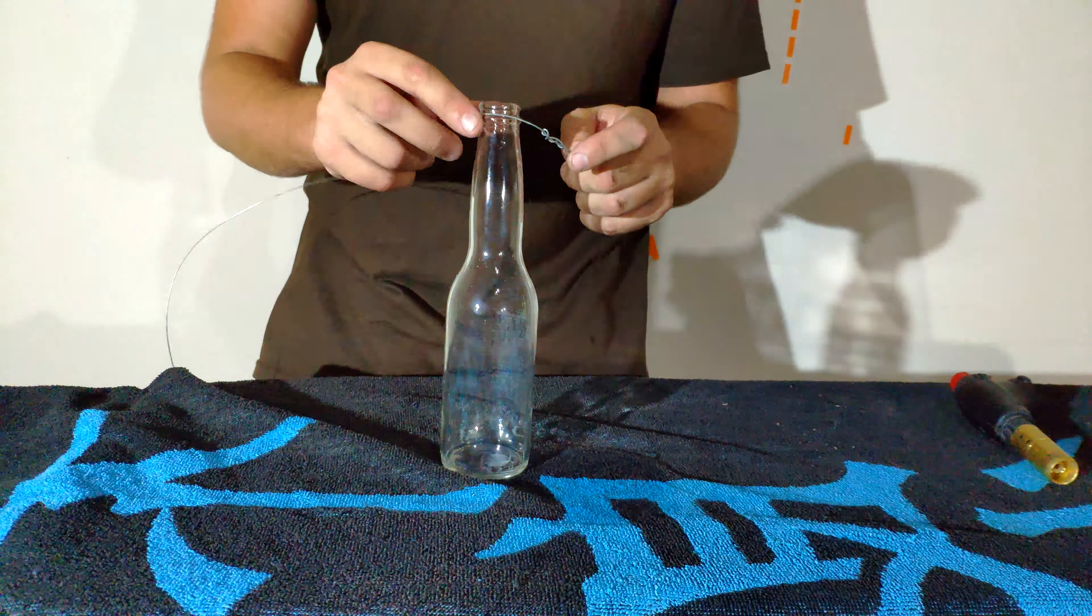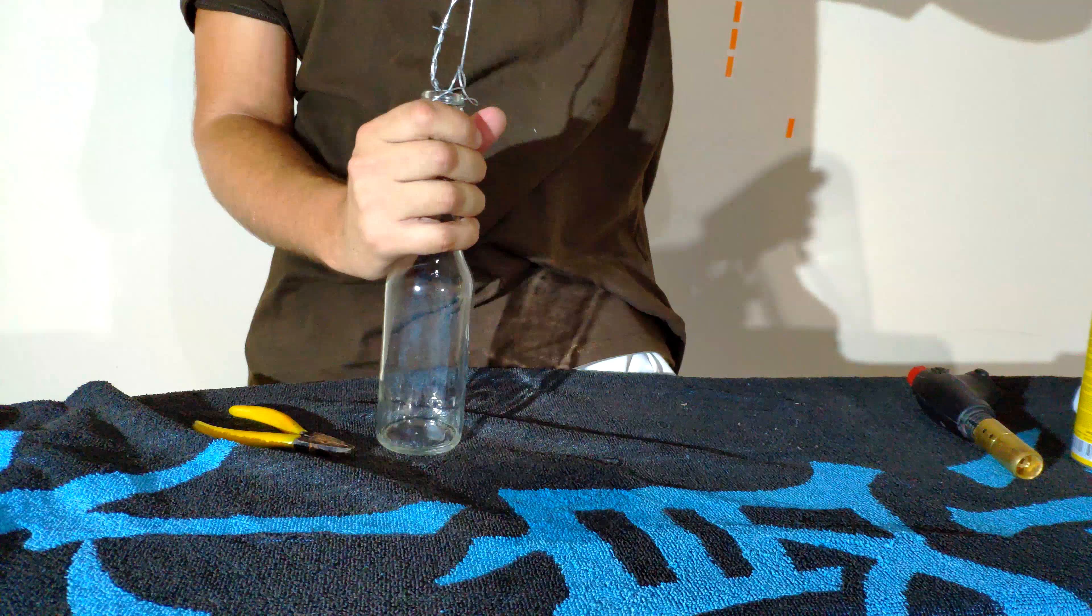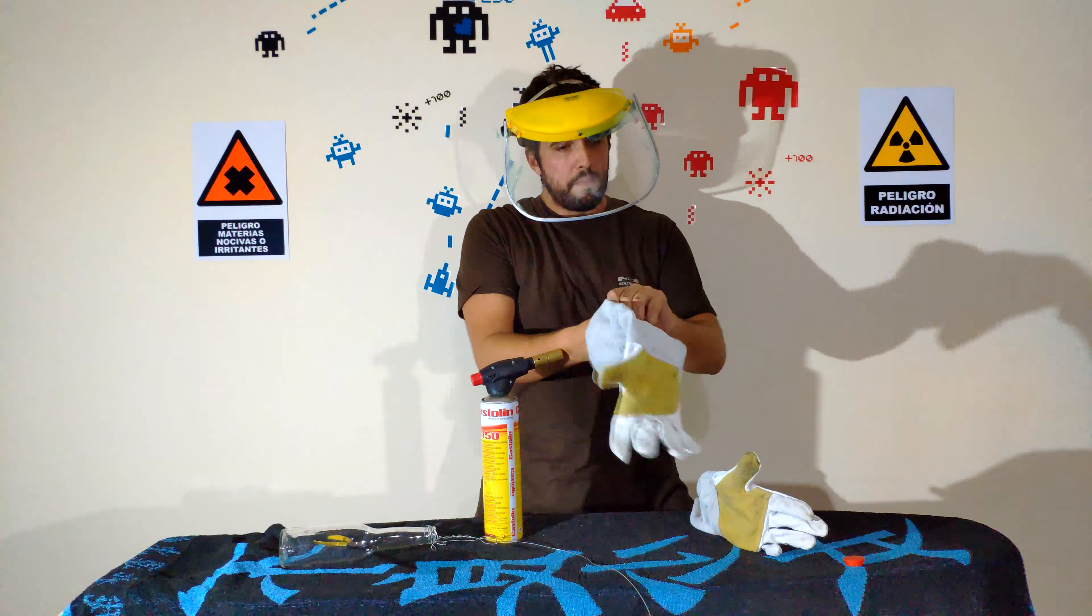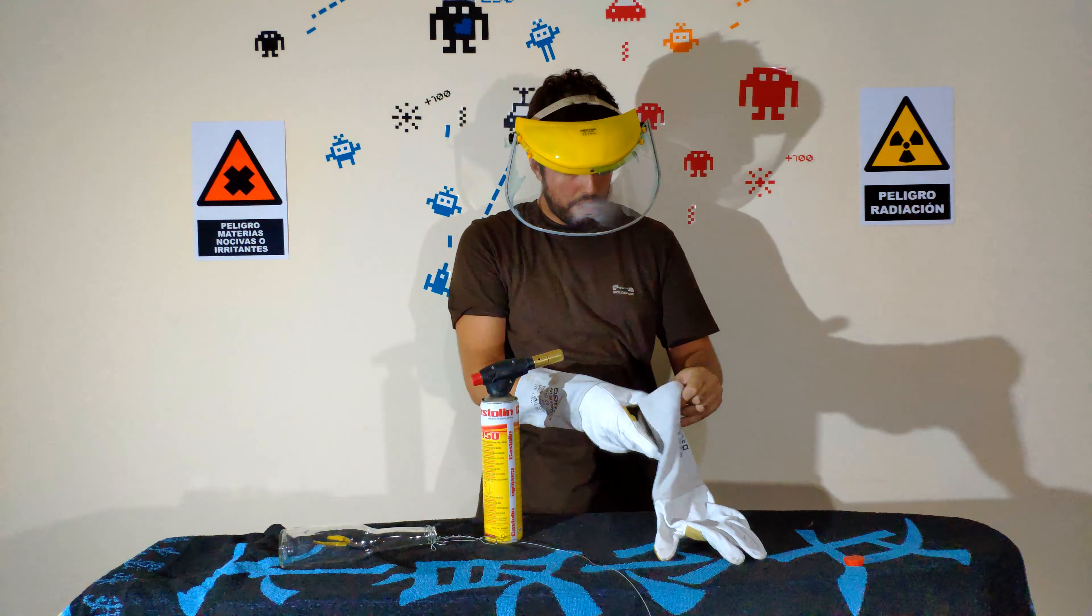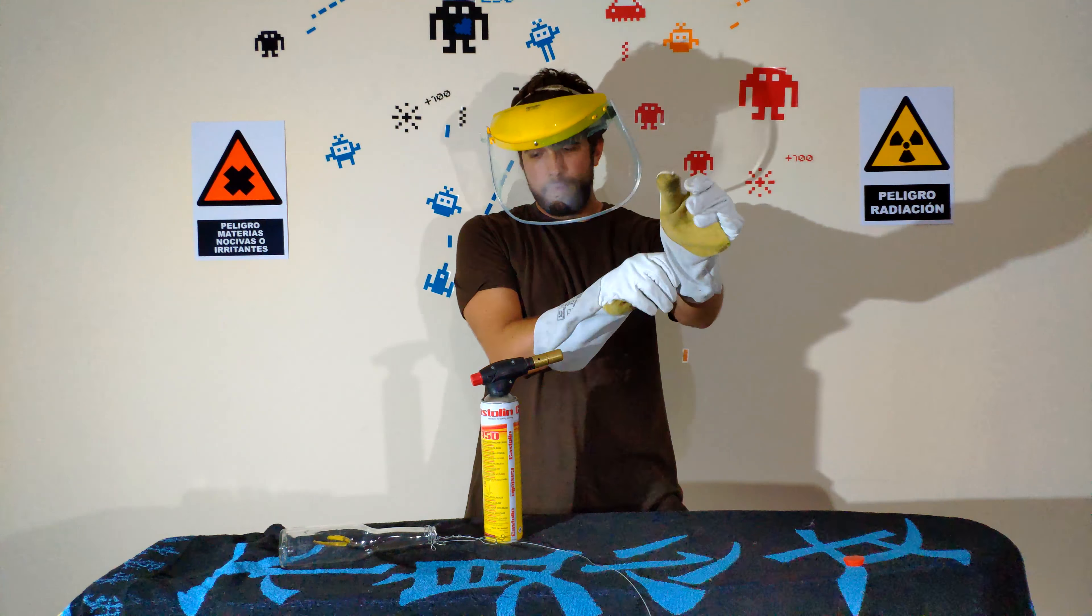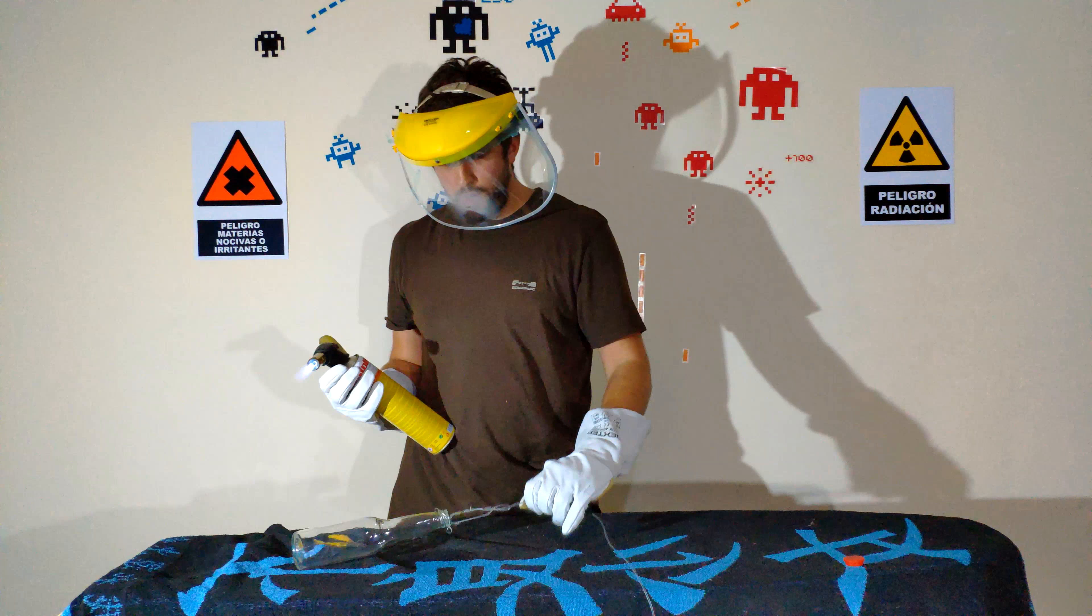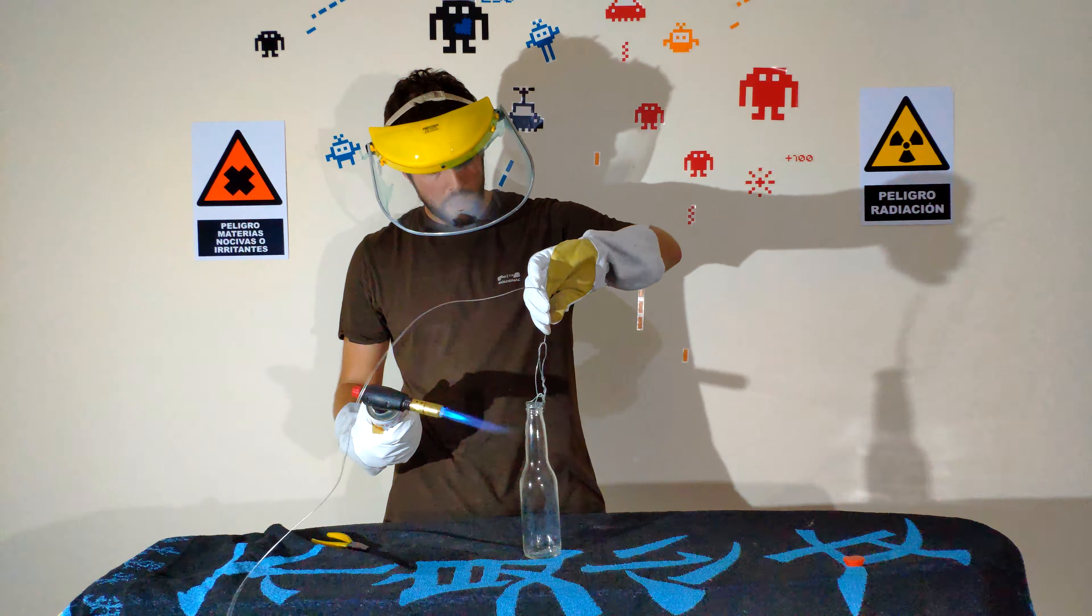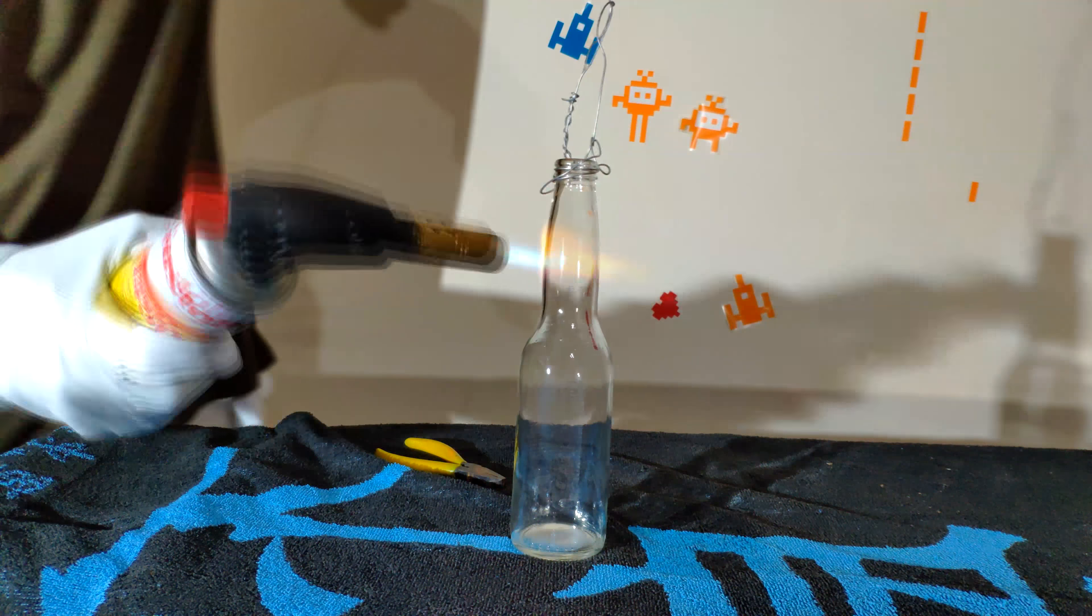Okay, first of all we're going to put some wire around the neck of the bottle. Remember, safety is number one priority. We're going to use these gloves and this mask because we're working with fire. Let's start with this. Don't heat it too much too fast, because if you do, the glass will get stressed and break.